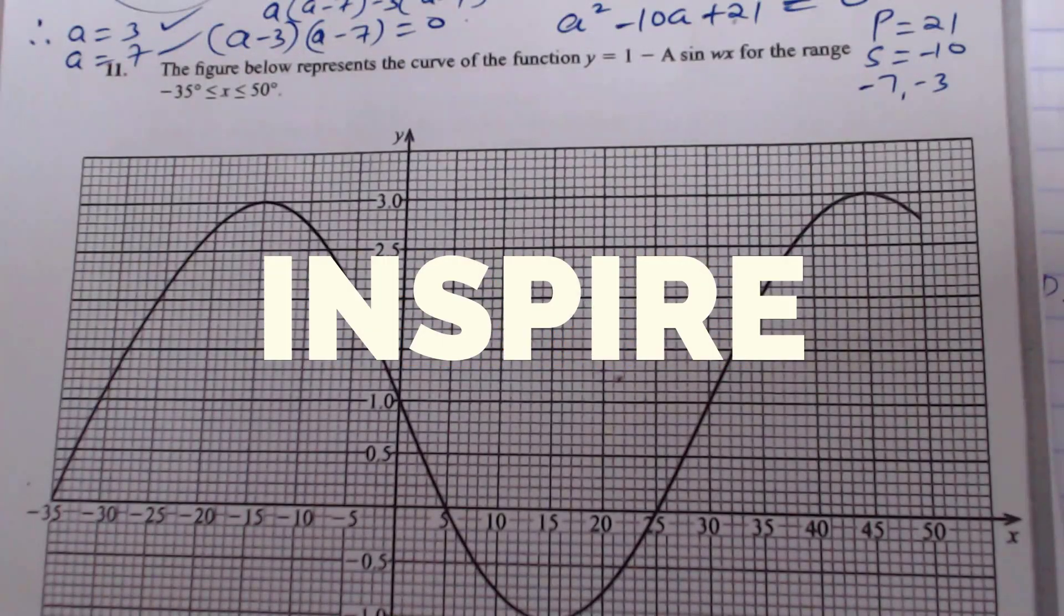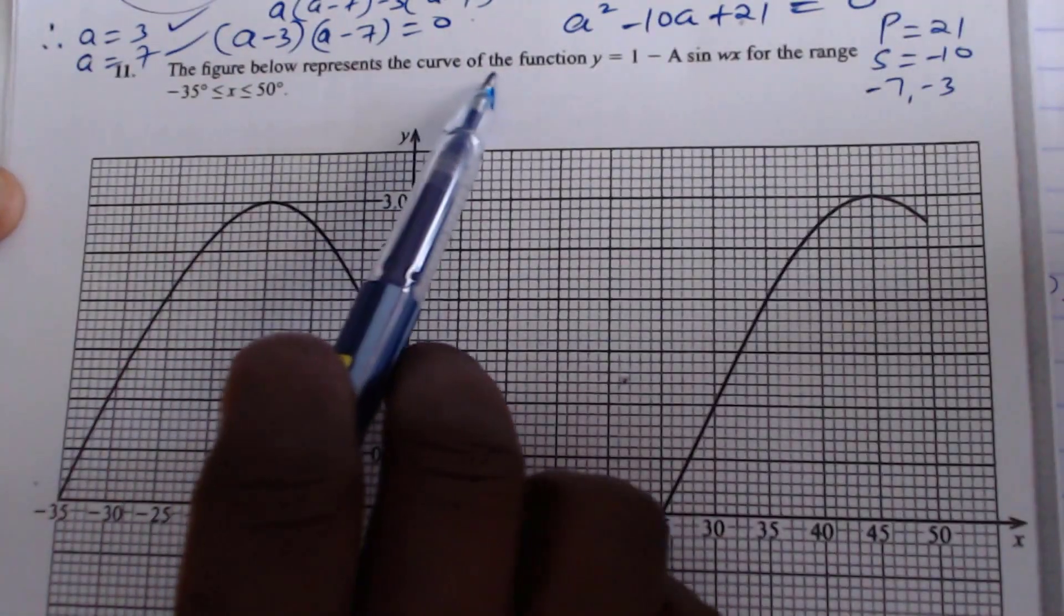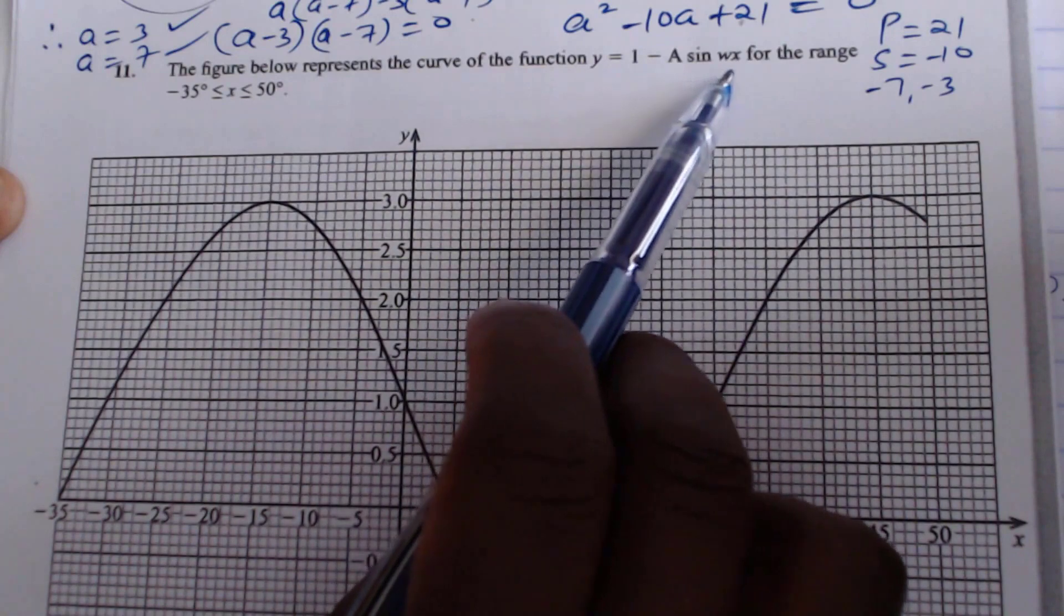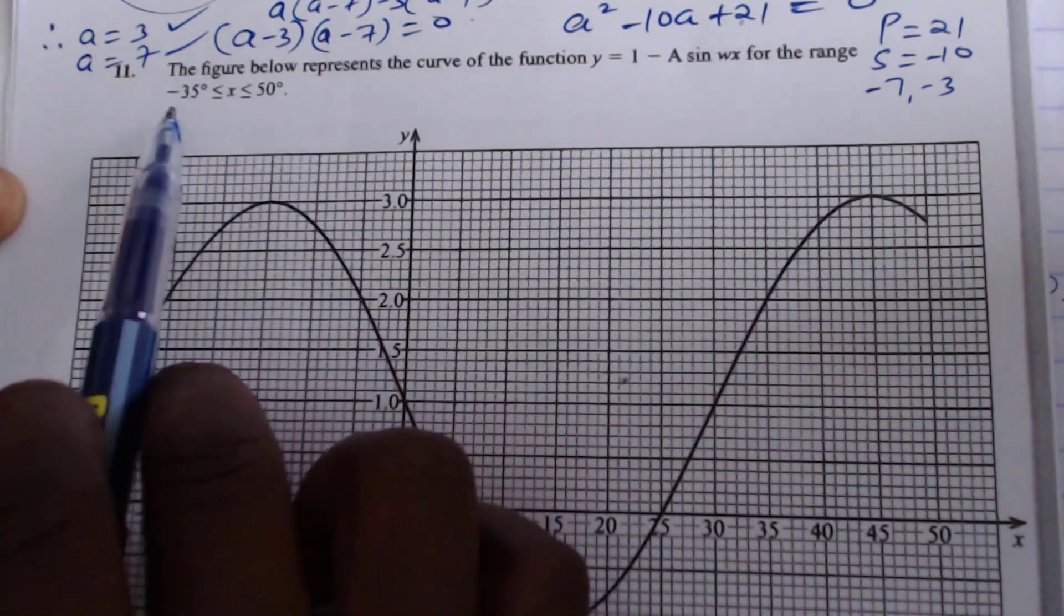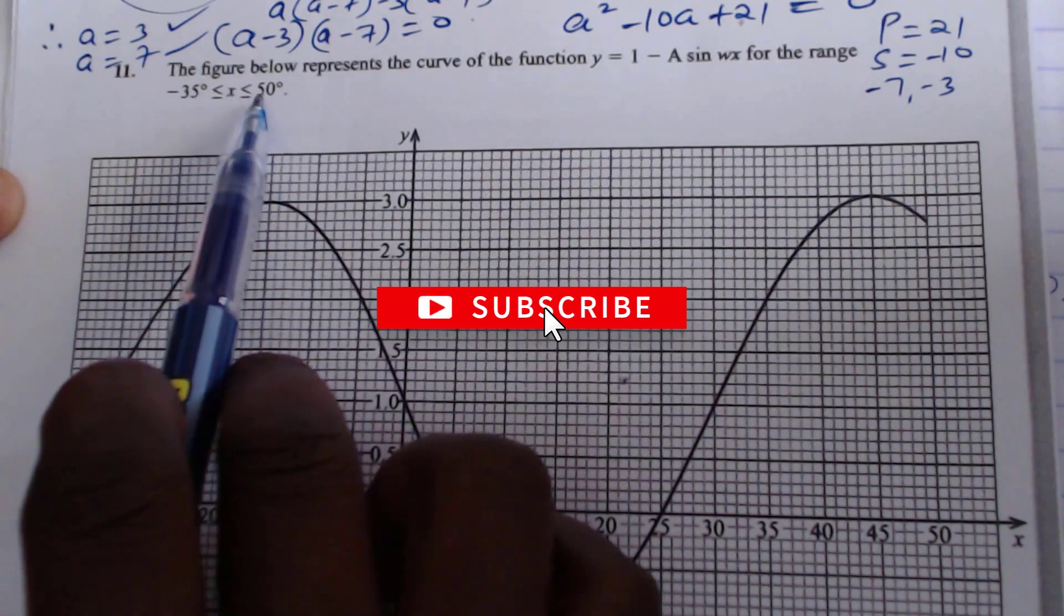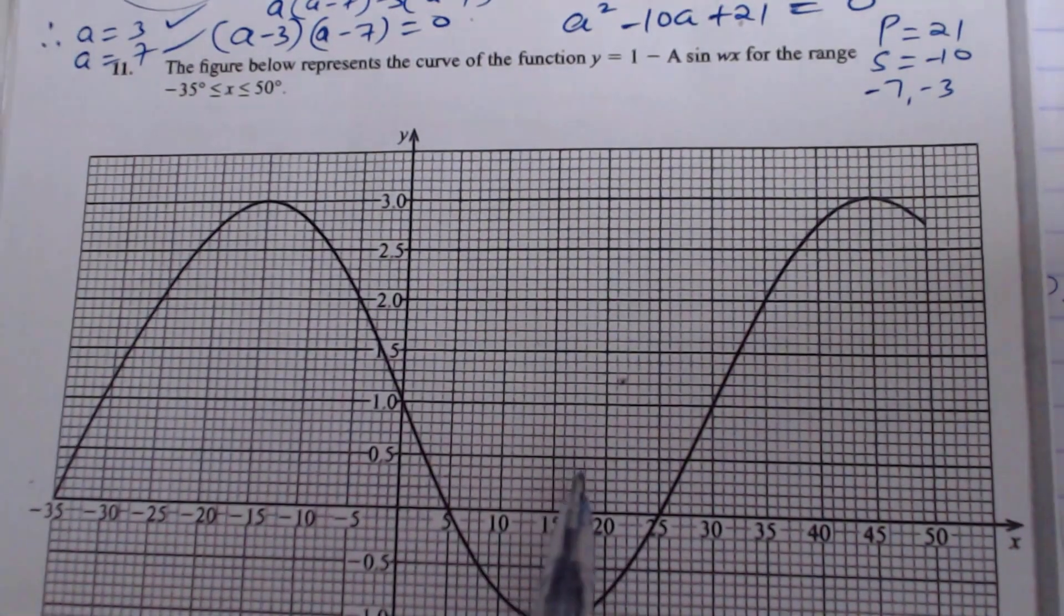Question 11. The figure below represents the curve of the function y equals 1 minus a sin wx for the range negative 35 degrees less than or equal to x less than or equal to 50 degrees. So you can see the graph is here.